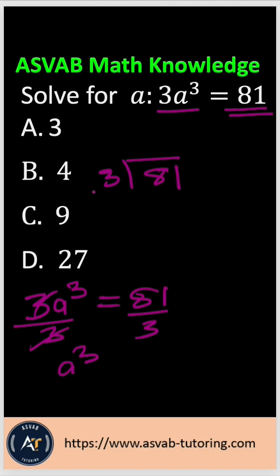81 divided by 3: 3 goes into 8 twice, 3 times 2 is 6, subtract to get 2. Bring this 1 down, 3 goes into 21 seven times. So a³ = 27.